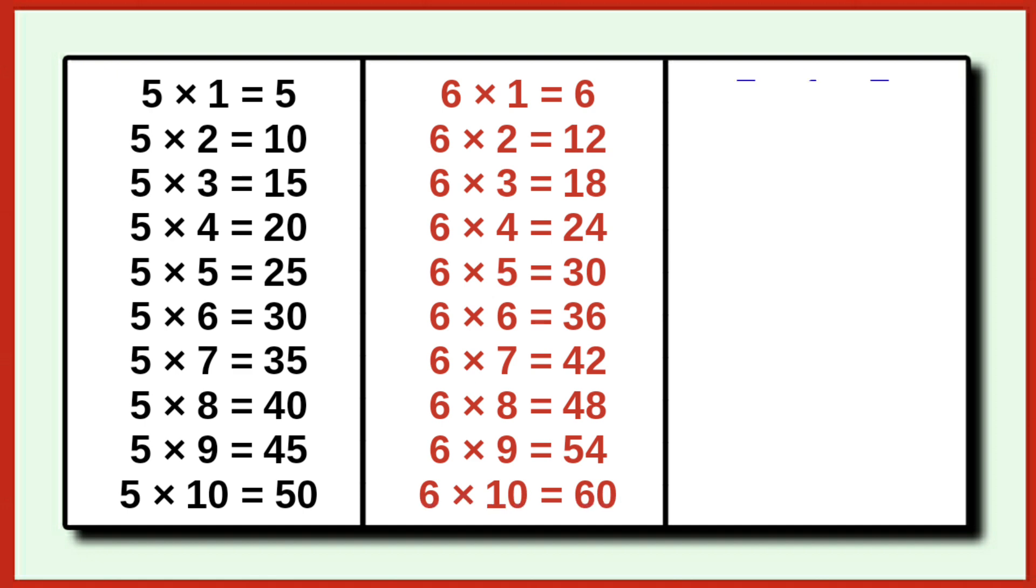7 times 1 is 7. 7 times 2 is 14. 7 times 3 is 21. 7 times 4 is 28. 7 times 5 is 35.